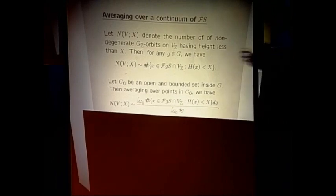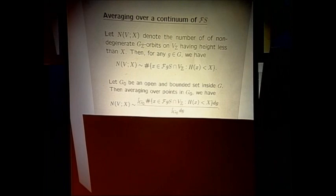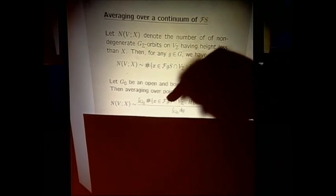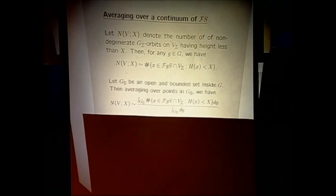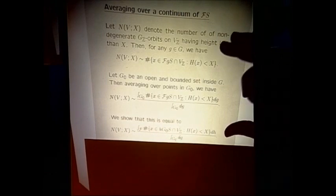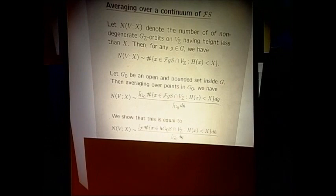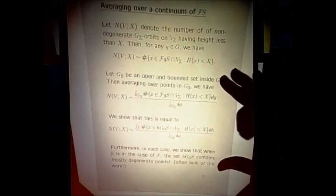Once you have it in this form, you switch the order of summation: instead of integrating over G0 inside the sum over F, you put G0 inside and integrate over F. This is the standard analytic trick of switching order of summation, which must be justified by analytic estimates. Once you have it as an integral over F — the fundamental domain for the group action — you can break it into the cuspidal part and the main body. When H is in the cusp, H·G0·S contains mostly degenerate points.